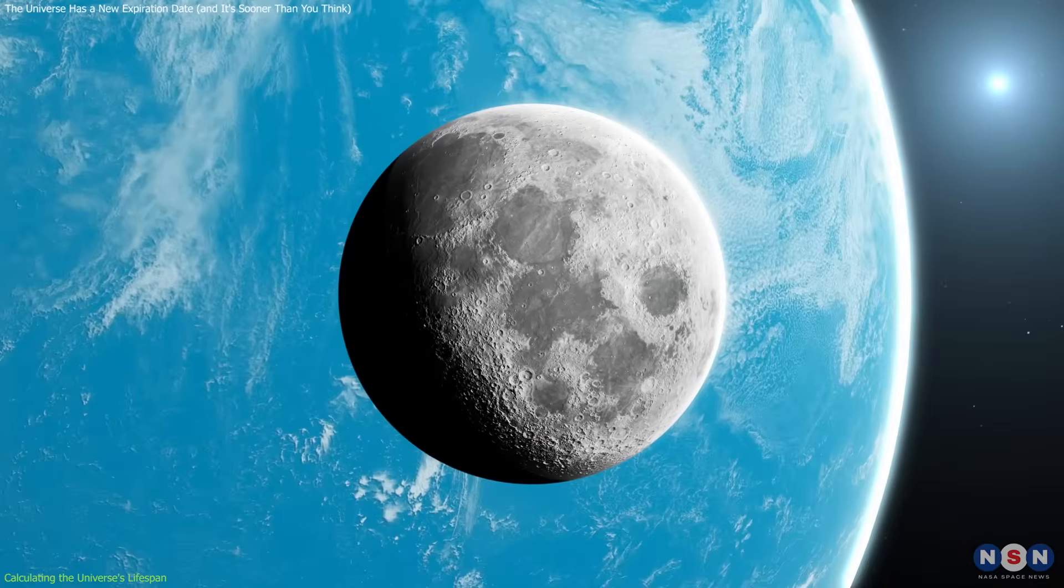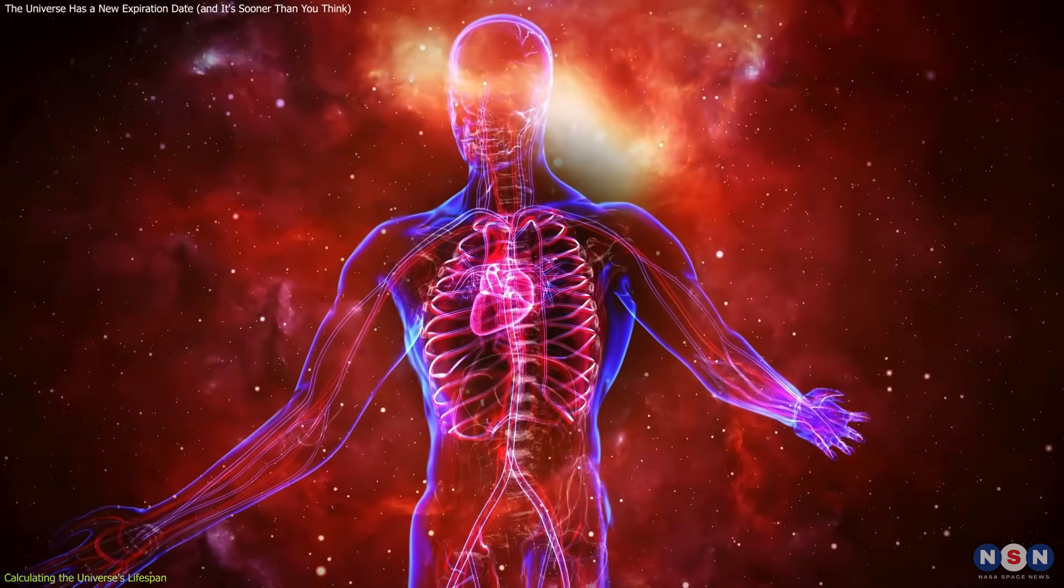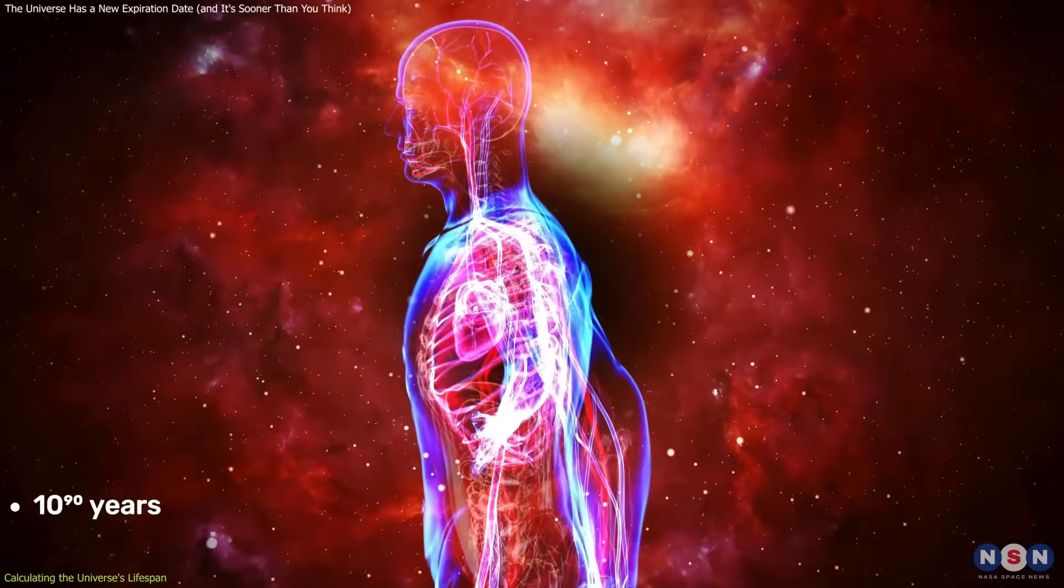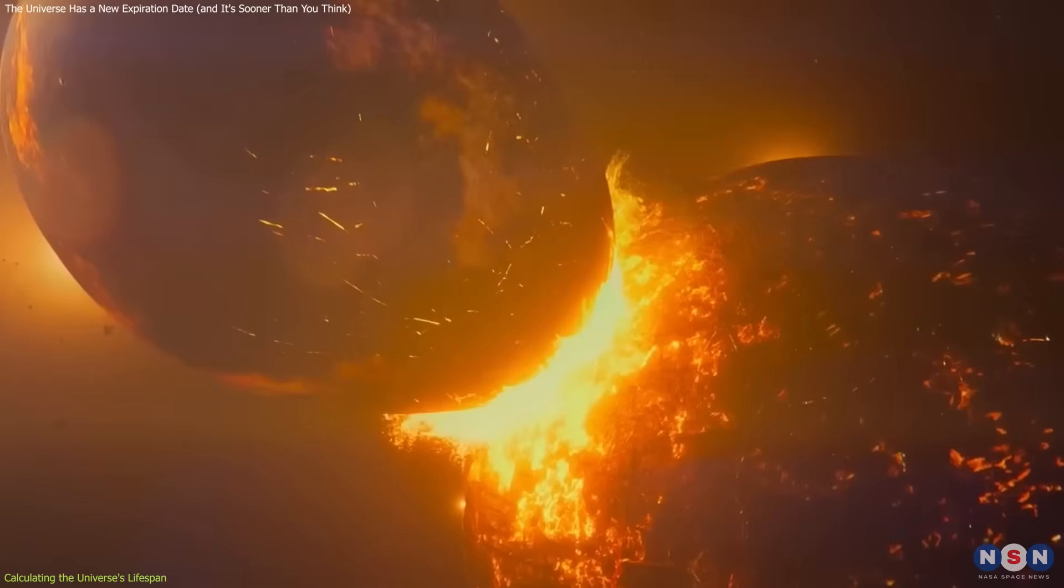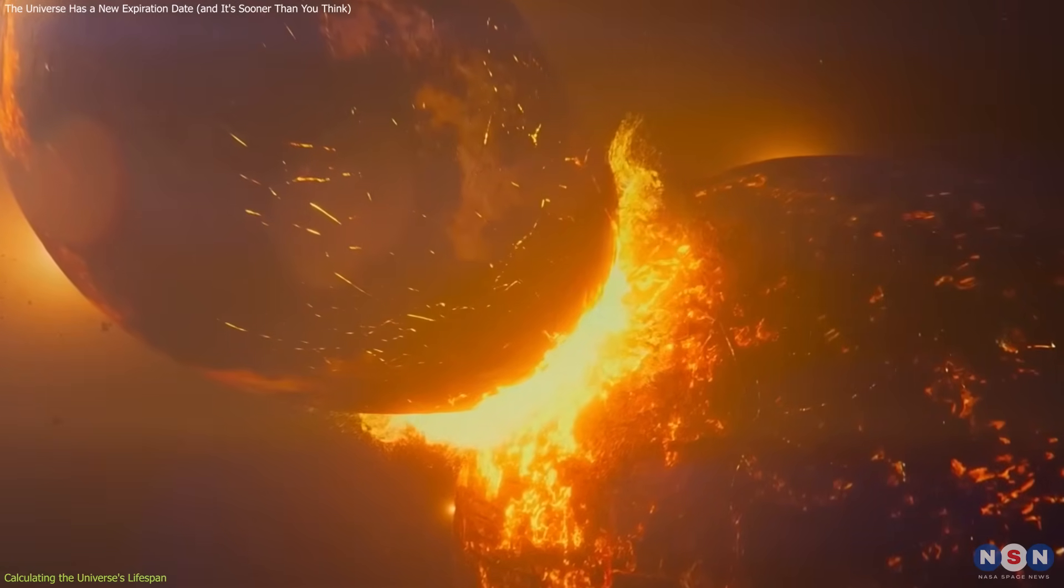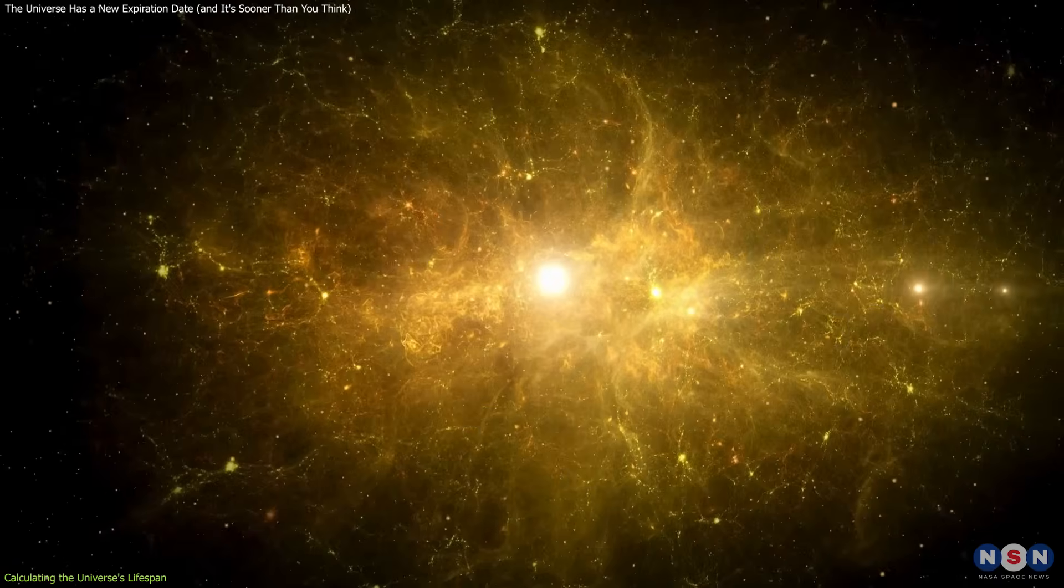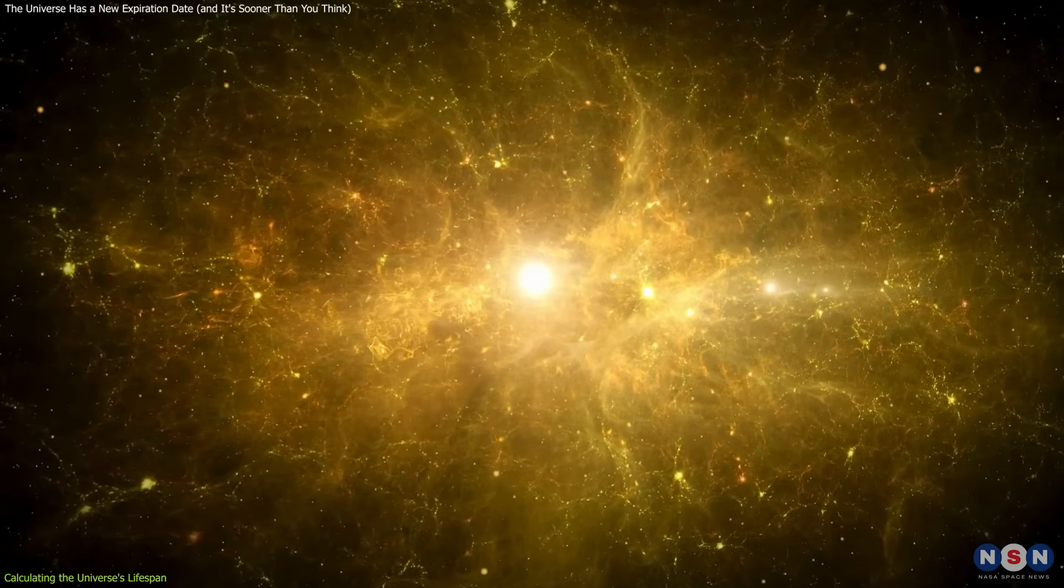For comparison and a touch of whimsy, they calculated that the Moon and even a human body would evaporate via this process in 10 to the 90th years. These are, of course, idealized numbers. In reality, the Moon and humans would be destroyed by countless other processes long before then. But the calculations illustrate the theoretical power and universality of Hawking-like radiation.